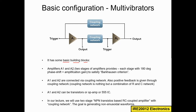Each amplifier stage provides 180 degrees of phase shift. To satisfy the Barkhausen criterion and produce oscillations, this one produces 180 degrees and this one also produces 180 degrees, giving 360 degrees total phase shift at the output. The input is essentially thermal noise. The amplifiers provide both phase shift and amplification gain.